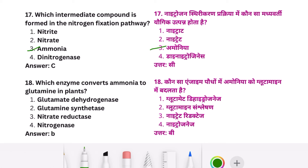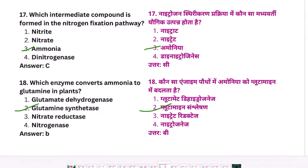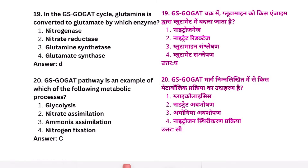Which enzyme converts ammonia to glutamine in plants? Glutamine synthetase — as the name suggests, it synthesizes glutamine. Use a little common sense and all MCQs will be solved.